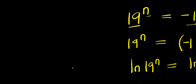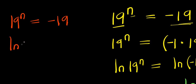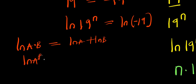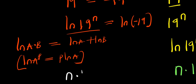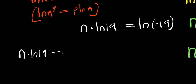Let's consider another identity. We have 19 to the power n equals negative 19. Applying natural log directly: natural log of 19 to the power n equals natural log of negative 19. Using ln(a^b) = b·ln(a), this gives n times natural log 19 equals natural log of negative 19, which I can express as negative 1 times 19.